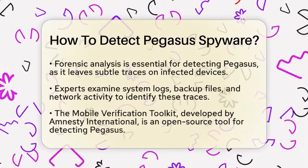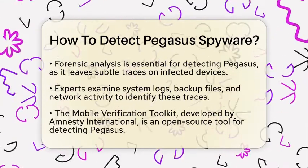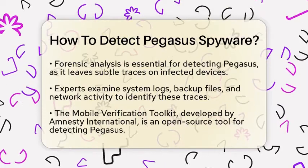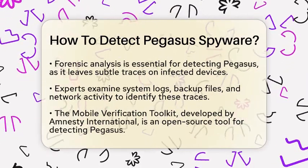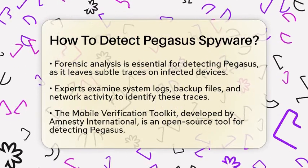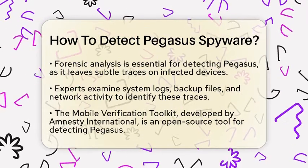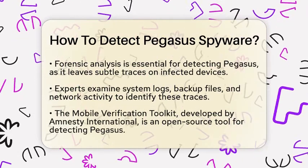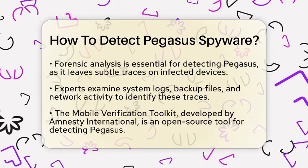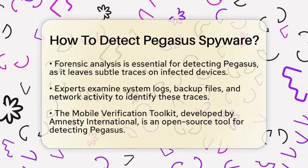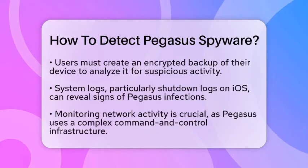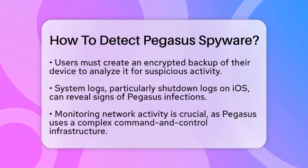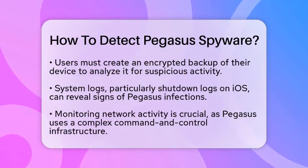Inspecting system logs can also reveal signs of Pegasus. Researchers have found that infections leave identifiable traces in the shutdown log file on iOS devices. This log records system reboot events. If there are anomalies, such as processes that interfere with rebooting, it may indicate the presence of Pegasus. This method is particularly effective if the device is rebooted on the same day it was infected.